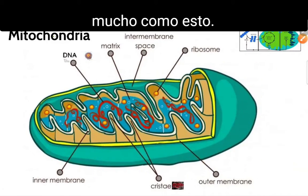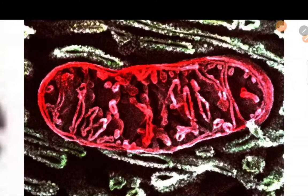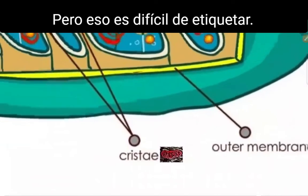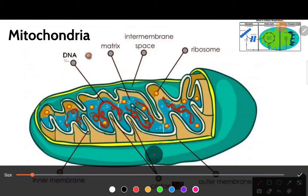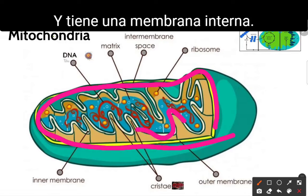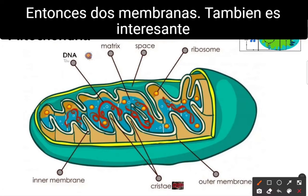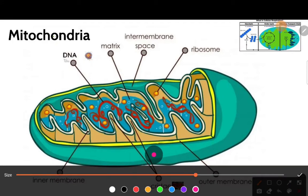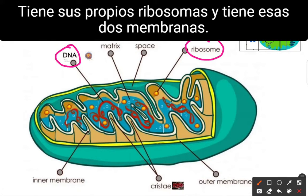The mitochondria looks a lot like this — this is under a microscope, but that's hard to label, so this is an artistic rendition. The mitochondria has parts that we should know about. It has an outer membrane and an inner membrane — so two membranes. It's also interesting because it has its own DNA, has its own ribosomes, and it has those two membranes.